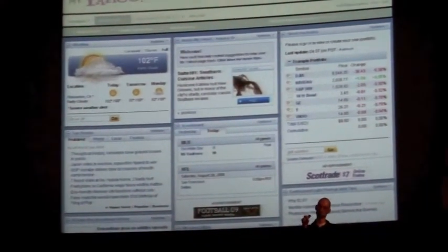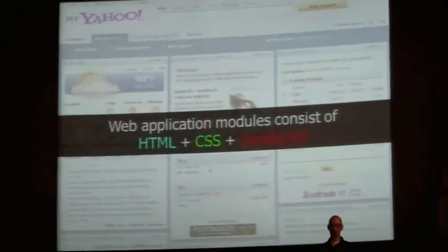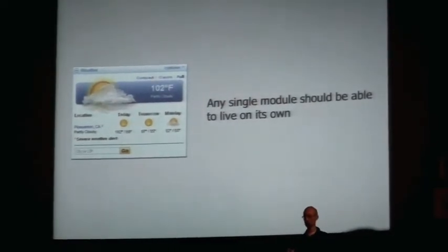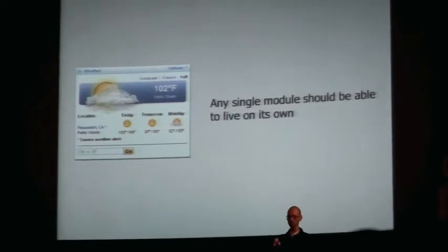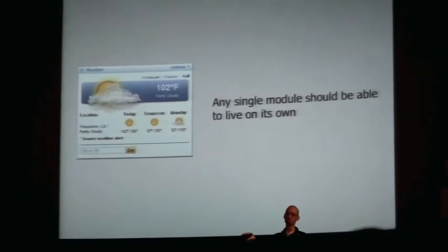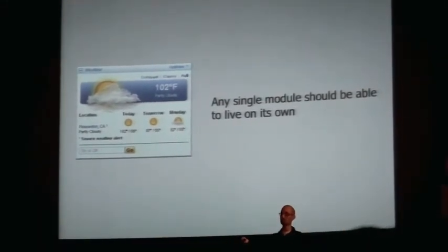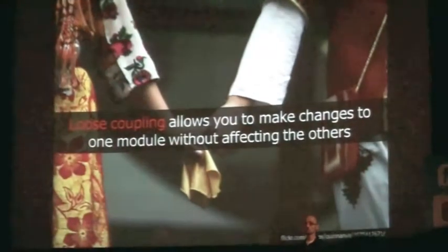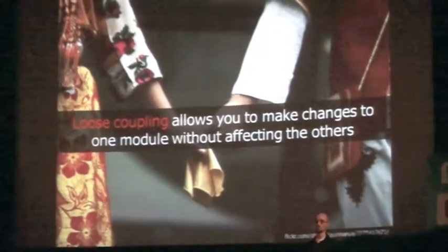You can go even further and start slicing up the rest — just drawing little rectangles, independent pieces of functionality. Each web application module consists of HTML, CSS, and JavaScript. Any single module should be able to live on its own — I should literally be able to take any one of those boxes, take it out of the page, drop it onto another page, and it should just work with no errors.